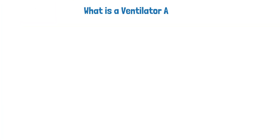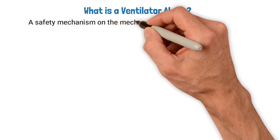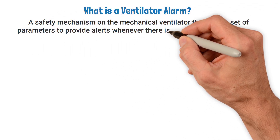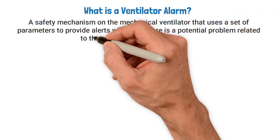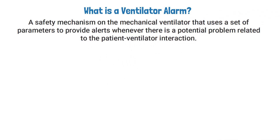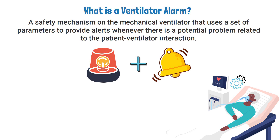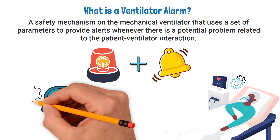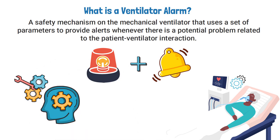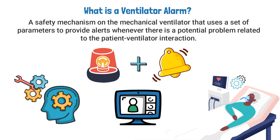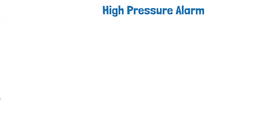A ventilator alarm is a safety mechanism on the mechanical ventilator that uses a set of parameters to provide alerts whenever there is a potential problem related to the patient-ventilator interaction. The alarms can be visual, audible, or both depending on the ventilator setting and the patient's condition. To learn each of the different ventilator alarms you must develop an understanding of the different ventilator modes and settings, but for this video we're specifically focusing on the high pressure alarm.